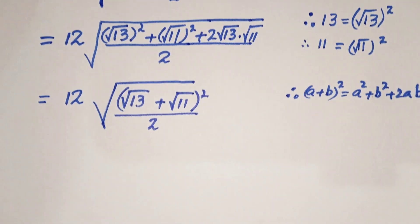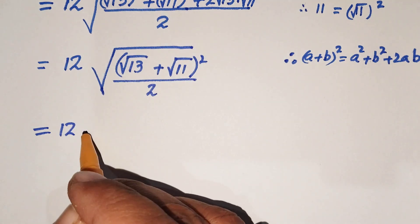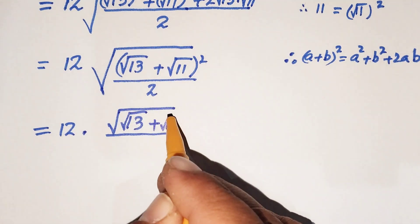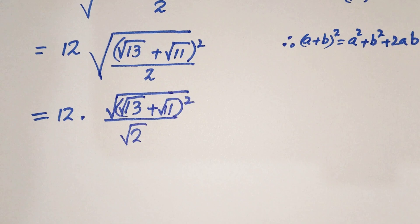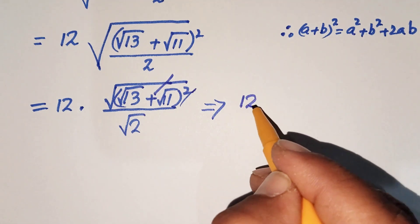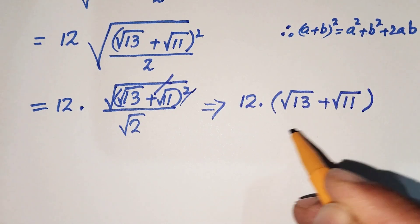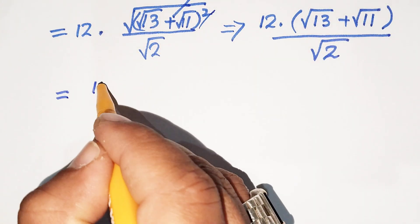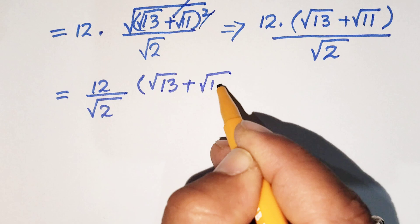So our next step: separating the square root across numerator and denominator, we get square root of square root of 13 plus square root of 11 whole squared, all over square root of 2. The square and square root cancel, giving 12 times square root of 13 plus square root of 11, all over square root of 2.